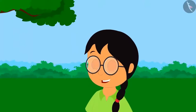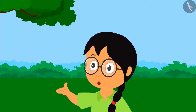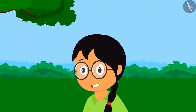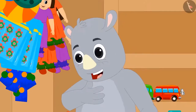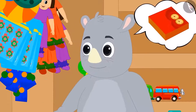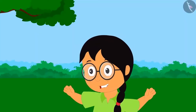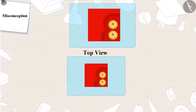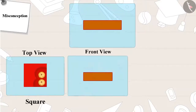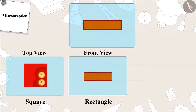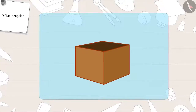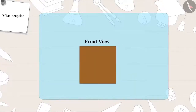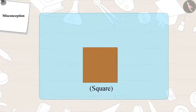'My second riddle: which object is a square from top view, front view, and side view?' The correct answer is a box of chalks. The box of chalks is a square in top view, front view, and side view.